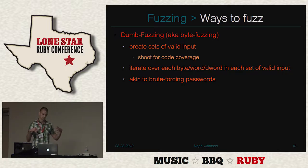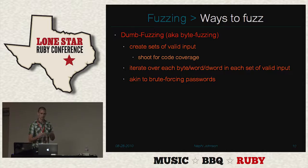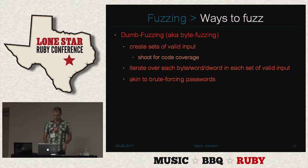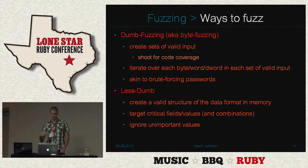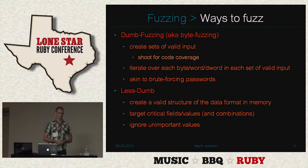One of the main ways people fuzz things is dumb fuzzing or byte fuzzing — where you create sets of valid input and just iterate over every single byte, pairs of bytes, or combinations of bytes and try all sorts of different values. It's not very dynamic and has a lot of drawbacks, but it does work.